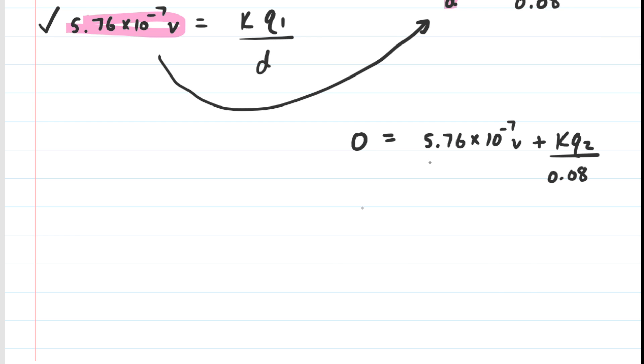So we could subtract the 5.76 times 10 to the minus 7 volts from both sides. And then to solve for Q2, we will multiply by 0.08 over K. We'll do that on both sides of the equation so that we can cancel out the 0.08s and the Ks.